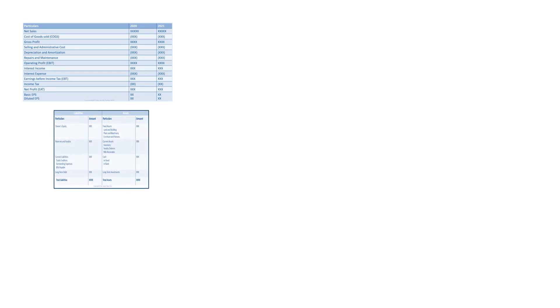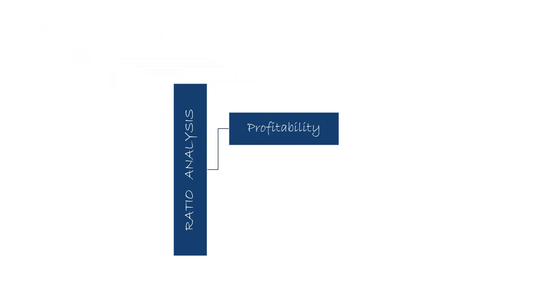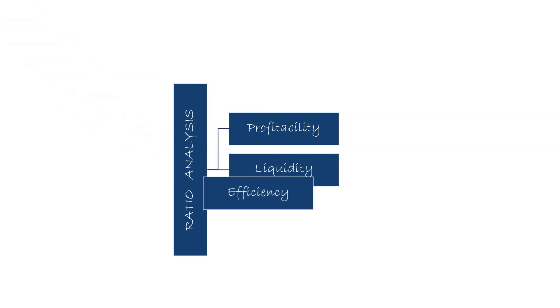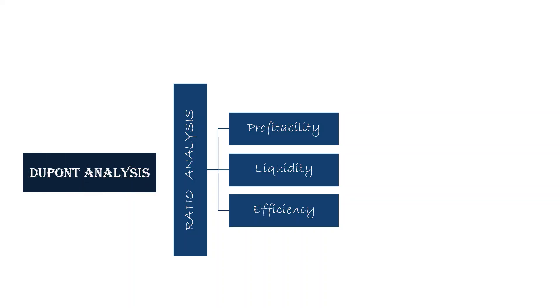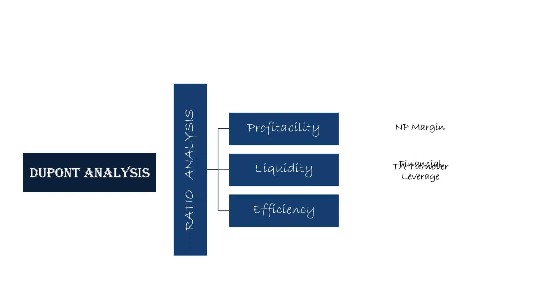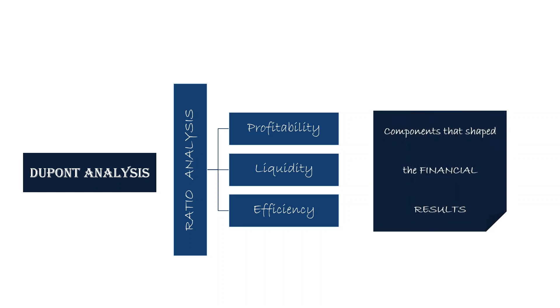The DuPont analysis blends information from the profit and loss account and the balance sheet. Ratio analysis is the way through which we can blend information from these two statements to come to conclusions on profitability, liquidity, and efficiency. The DuPont analysis is based on ratio analysis — it combines a few ratios to help arrive at the conclusion of how efficiently a firm is utilizing its assets and debt to improve its profitability. It allows disintegration of a company's performance to see which components shaped the financial results.